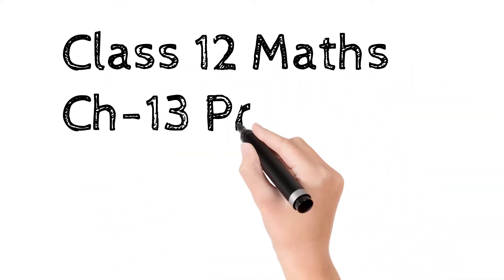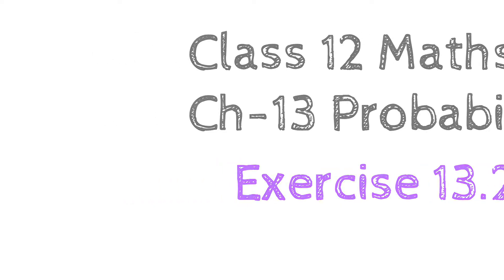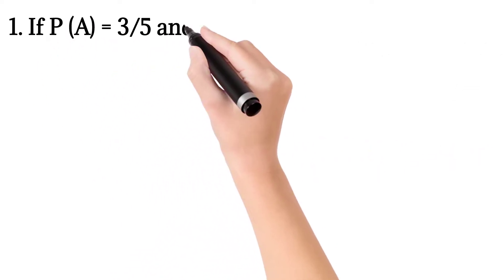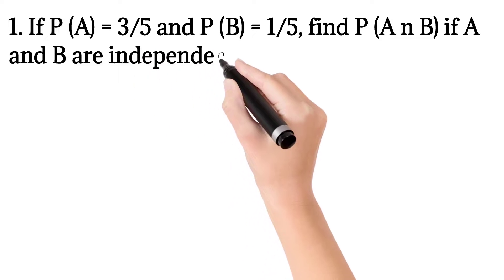Hello guys, we are going to solve Exercise 13.2 from Class 12 Maths, Chapter 13 Probability. The first question is: If P(A) is equal to 3/5 and P(B) is equal to 1/5, we need to find P(A intersection B).